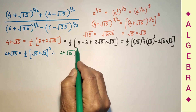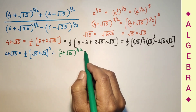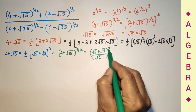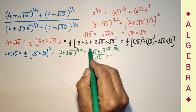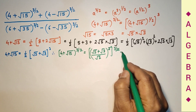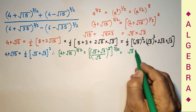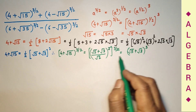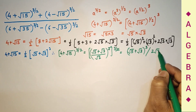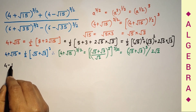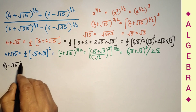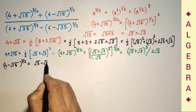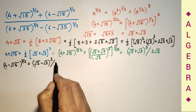Therefore, (4 plus square root of 15) raised to the power 3/2 equals (root 5 plus root 3) cubed upon root 2 cubed, which equals (root 5 plus root 3)³ divided by 2 root 2. Similarly, (4 minus square root of 15) raised to the power 3/2 can be rewritten as (root 5 minus root 3)³ divided by 2 root 2.